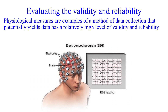Methods of data collection that might have relatively high levels of validity and reliability are physiological measures. The advantage of a physiological measure is that it's objective, not subjective. For example, using an EEG to measure brain activity — you could argue it effectively measures what it's supposed to, namely brain waves, frequency, and amplitude. If use of that EEG across multiple testing phases generates consistent results based on the participant's state of consciousness, you can argue this method is generating reliable results.